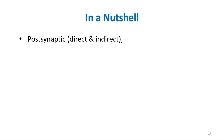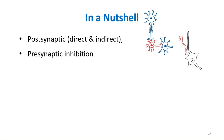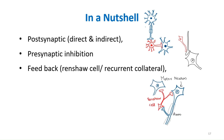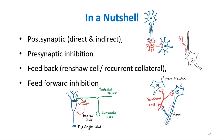In summary, we have discussed postsynaptic inhibition — both direct and indirect; presynaptic inhibition, in which the presynaptic terminal is affected; feedback inhibition, exemplified by Renshaw cell inhibition; and feed-forward inhibition, which occurs in the cerebellum. The concept is clear and you now understand how to write this answer for the exam.